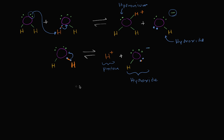In the video on the auto-ionization of water, we saw that two neutral water molecules could interact where one swipes a hydrogen ion from the other. You're left with a hydronium ion, and the molecule that had the hydrogen ion swiped from it — remember, a hydrogen ion is really just a proton — gains an electron, takes all of the electrons from the covalent bond forming another lone pair, gets a negative charge, and becomes a hydroxide ion.